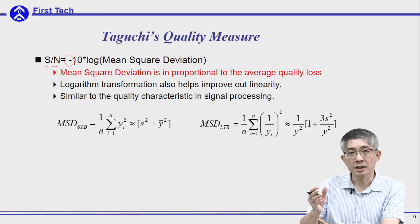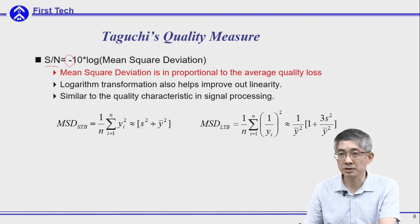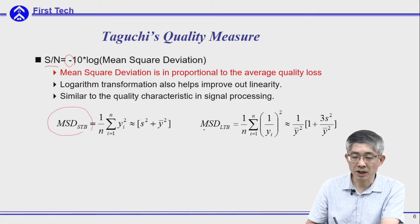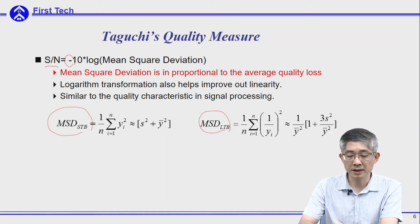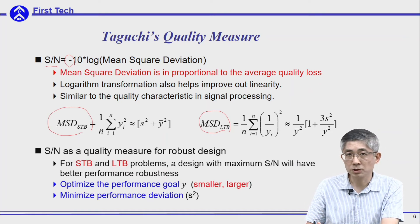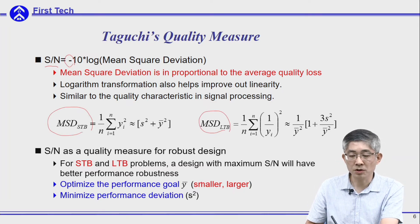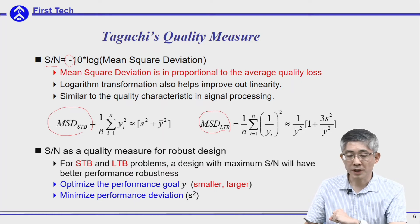This makes the system estimable using a linear model, which we will discuss in the future. For smaller-the-better and larger-the-better cases, we simply substitute the mean squared deviation into the equation and we get the SN ratio. By using this SN ratio, we can achieve the same objective: optimize the performance goal and minimize performance deviation. Therefore, we just need to find the design with the higher SN ratio to achieve these two goals.